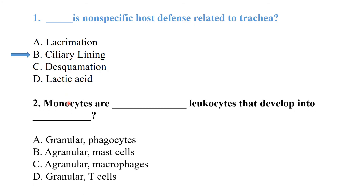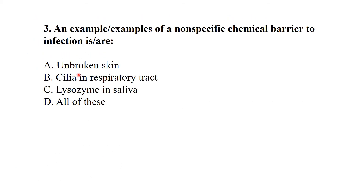Monocytes are agranular leukocytes. After maturation they develop into macrophages. An example of a non-specific chemical barrier to infection — among the given options, the non-specific chemical barrier is lysozyme in saliva.